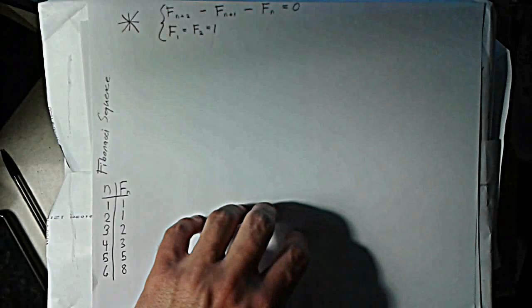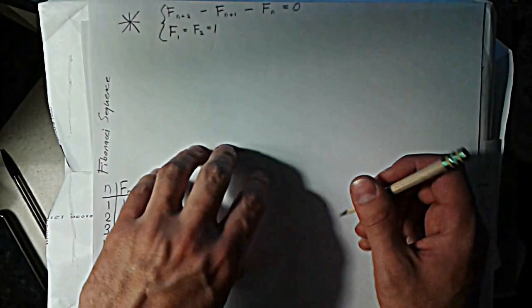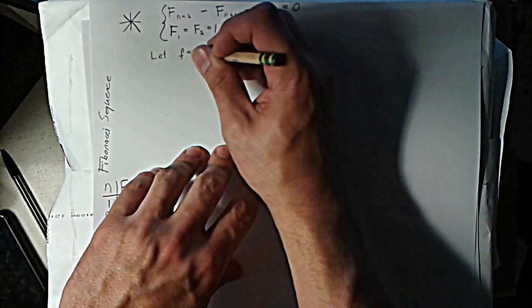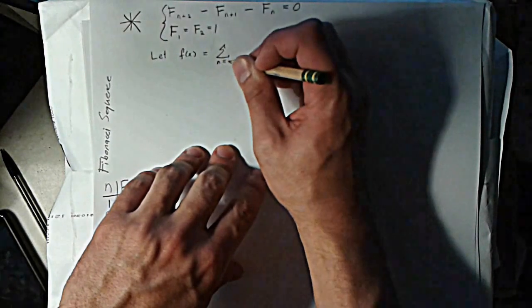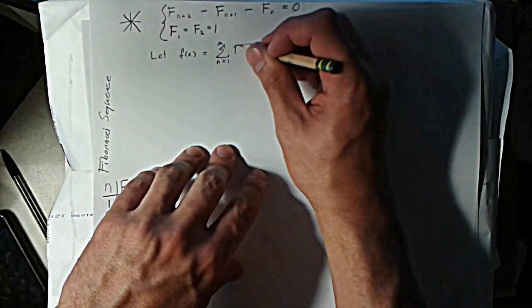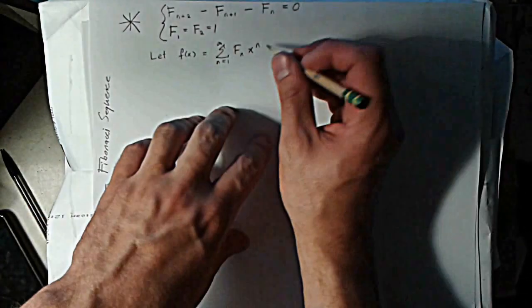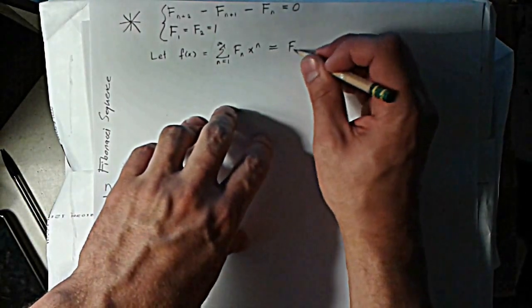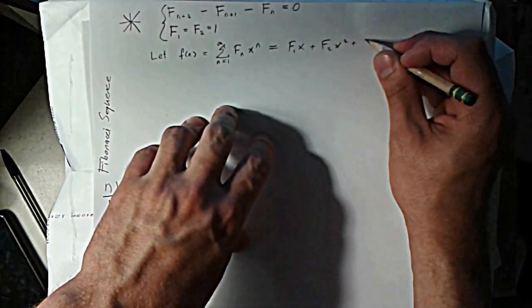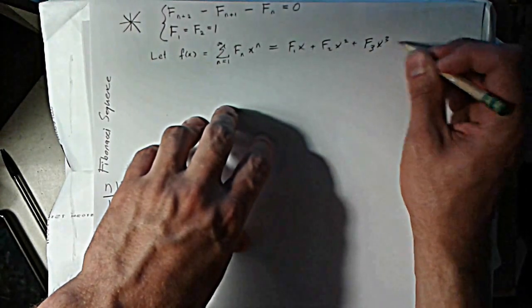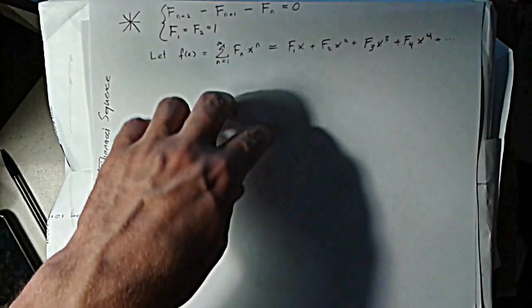So I'll try the other method that I've showed you so far, which is finding a generating series. So I'm going to let f(x) be the power series going from 1 to infinity, where each coefficient is a Fibonacci number. And so if I write that out, that's going to be F₁x plus F₂x² plus F₃x³ plus F₄x⁴ and so on.